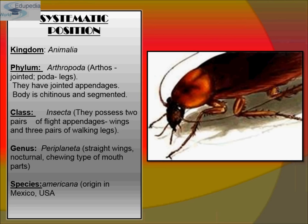Now, systematic position. Cockroaches belong to the kingdom Animalia, phylum Arthropoda — 'ortho' means jointed and 'poda' means legs, so they have jointed appendages. Their body is chitinous and segmented, meaning it has a chitin layer. They belong to class Insecta, possessing two pairs of flight appendages (wings) and three pairs of walking legs. The genus is Periplaneta, meaning straight wings; they are nocturnal with chewing-type mouthparts. The species is Americana, originating in Mexico and the USA.